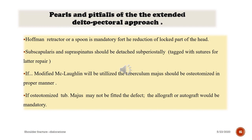Pearls and pitfalls of the extended deltopectoral approach: a Hohmann retractor or spoon is mandatory for reduction of the local part of the head. Subscapularis and supraspinatus should be detached subperiosteally and tagged with sutures for later repair. If a modified McLaughlin procedure will be utilized, the tuberculum majus should be osteotomized properly. If the osteotomized tuberculum majus does not fit the defect, allograft or autograft will be mandatory.